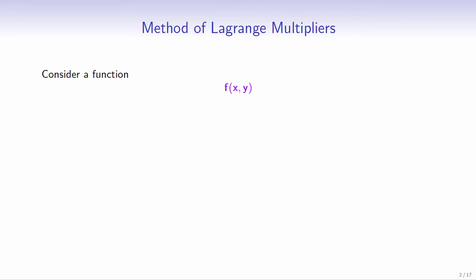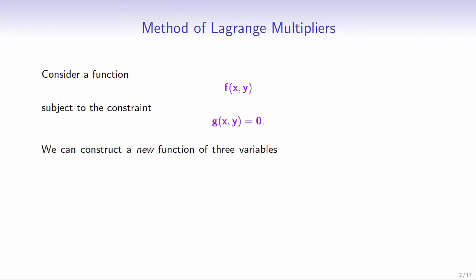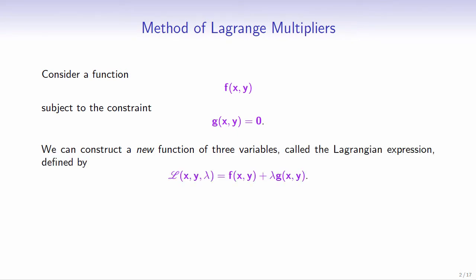Consider a function f of two variables x and y, subject to the constraint g equals 0, where g is another function of x and y. We can construct a new function of three variables called the Lagrangian expression, where L equals f plus lambda times g.